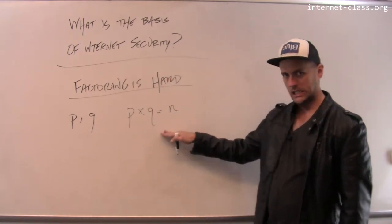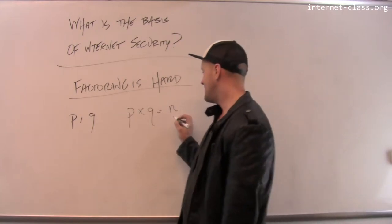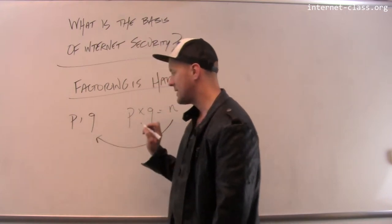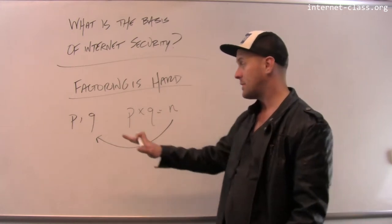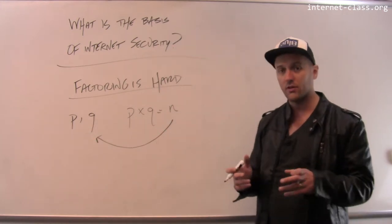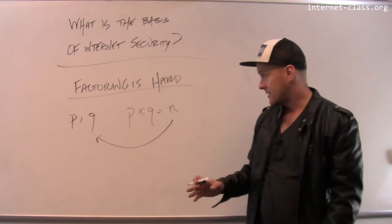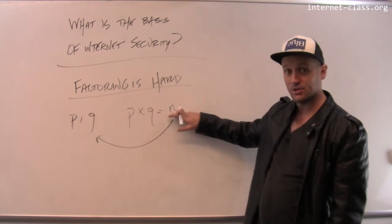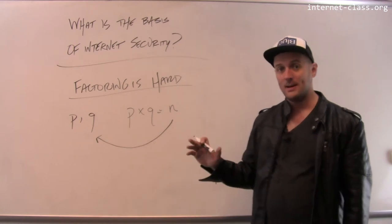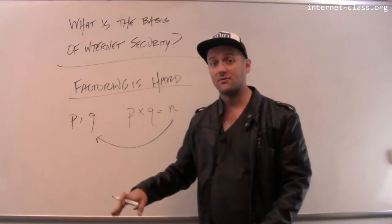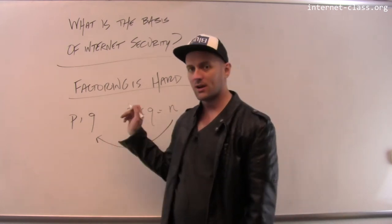So if I give you p and q, it is very easy to compute n - you just multiply them together. If I give you n, it is very hard to compute p and q, particularly if n is really big and p and q are both very large. If I take two really big prime numbers and multiply them together to get n, then if I give you n, it is very hard and you would have to spend an enormous amount of time and computation to factor n and recover p and q.